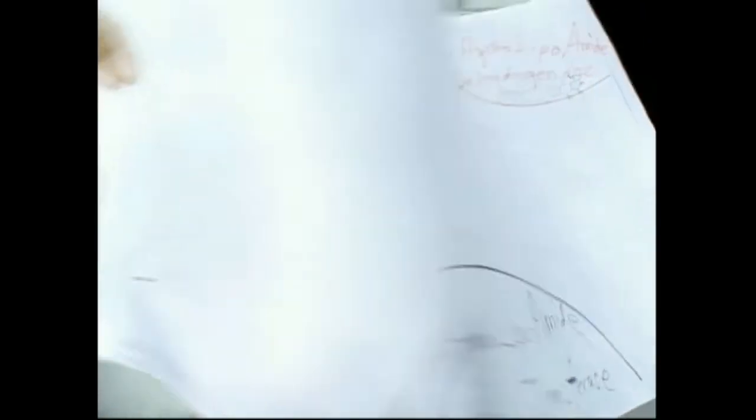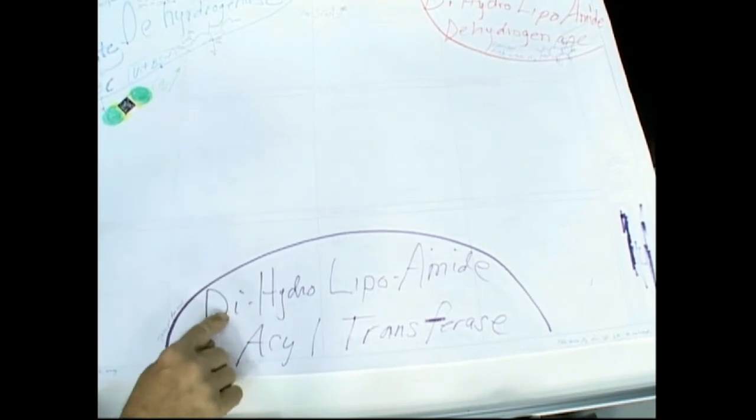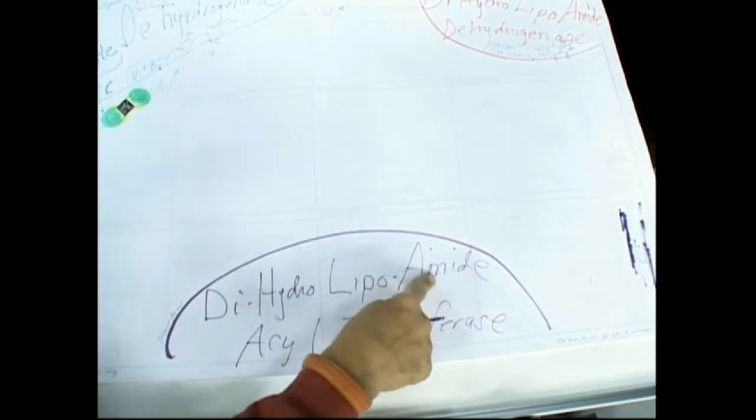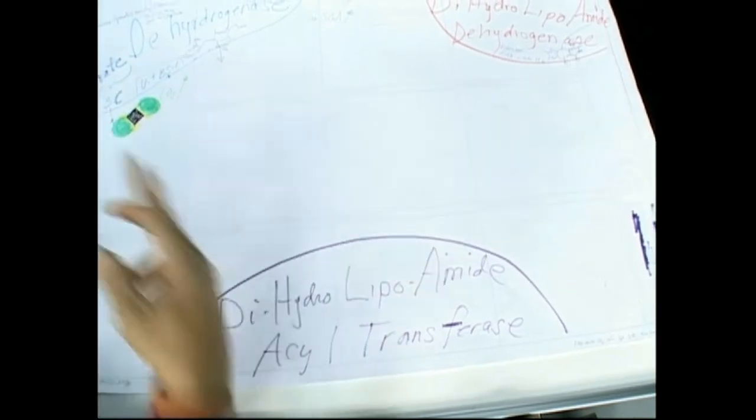Lipoic acid. Lipoic acid here. This is held in the enzyme of dihydrolipoamide acyl transferase, by a lysine. So it gives it a big arm.